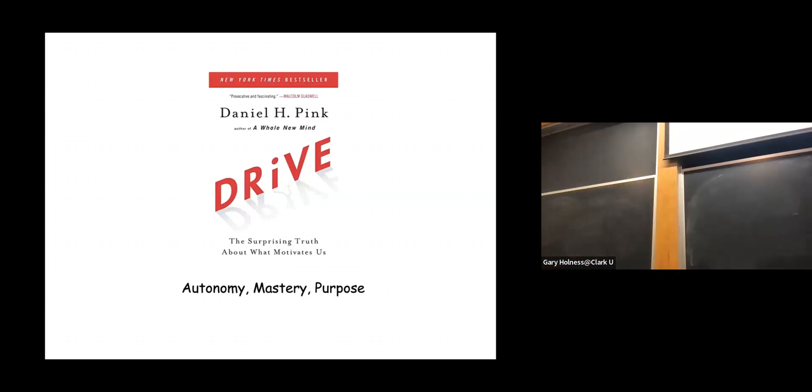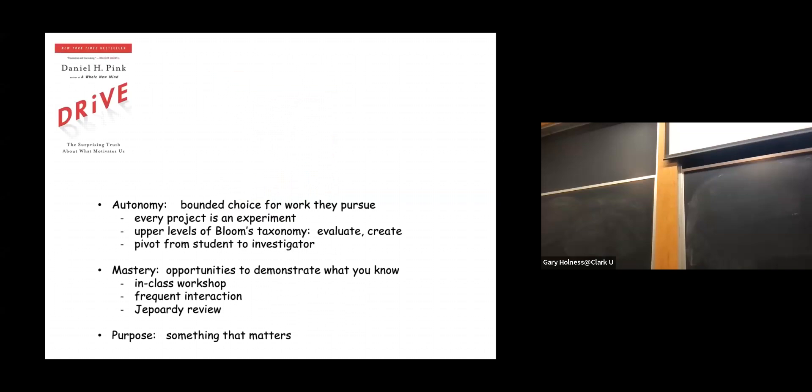So the challenge of this course: I derive my motivation for how I teach from ideas espoused in this book by Daniel Pink. I highly recommend it. It talks about three things that motivate people to excel, to go beyond: autonomy, mastery, and purpose. So in everything that I do in the design of this course, in all my courses, I engage those three things. Autonomy concerns bounded choice, not free choice, because at the end of the day they can't do anything they want to.